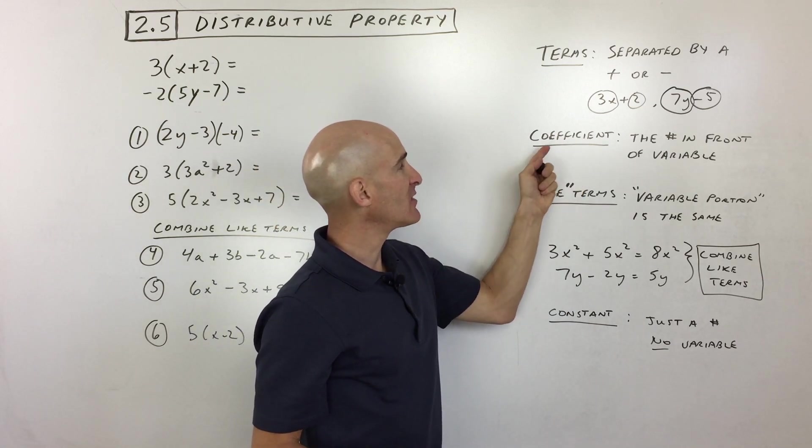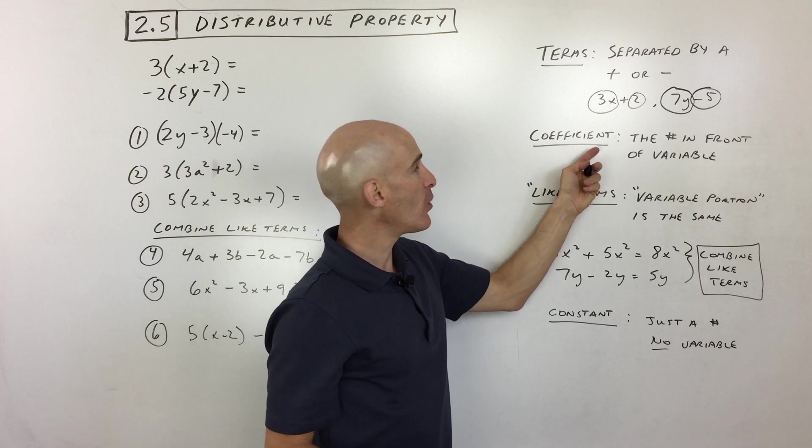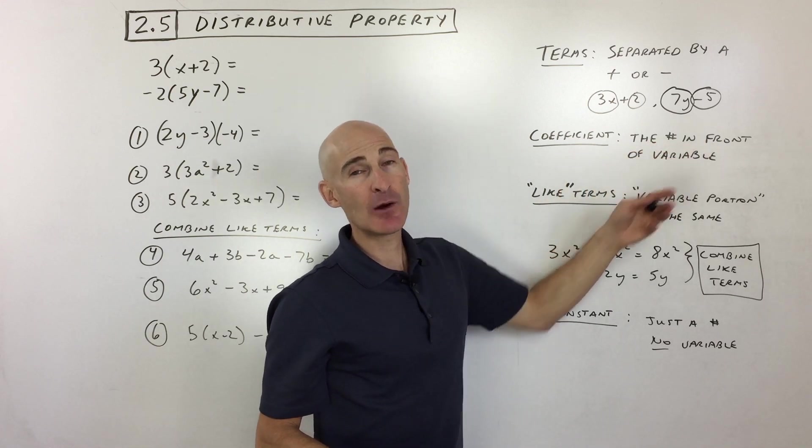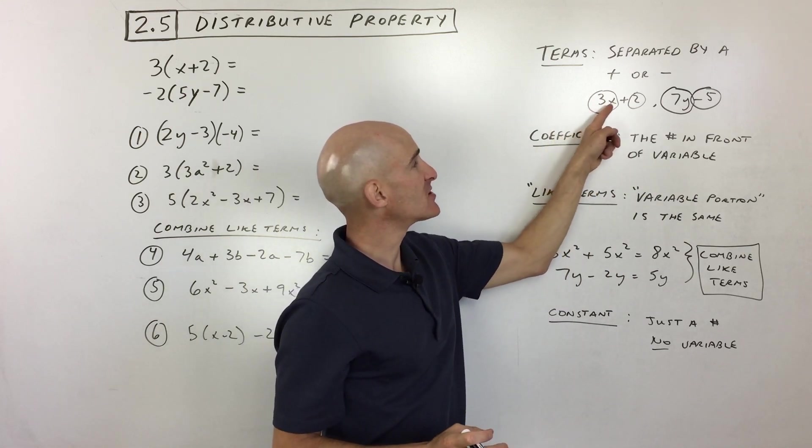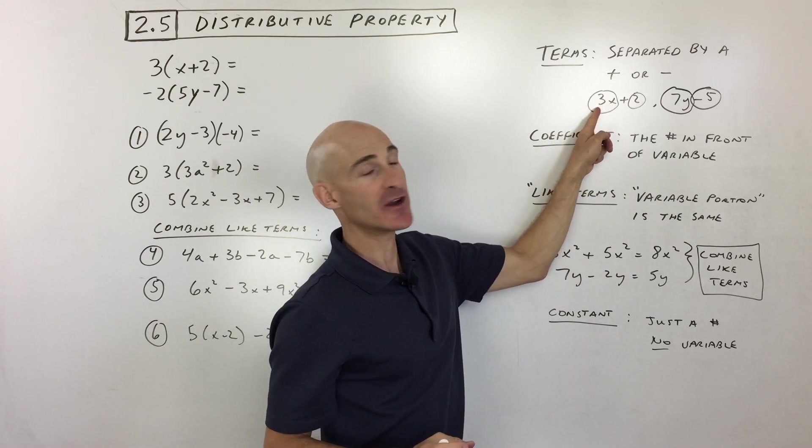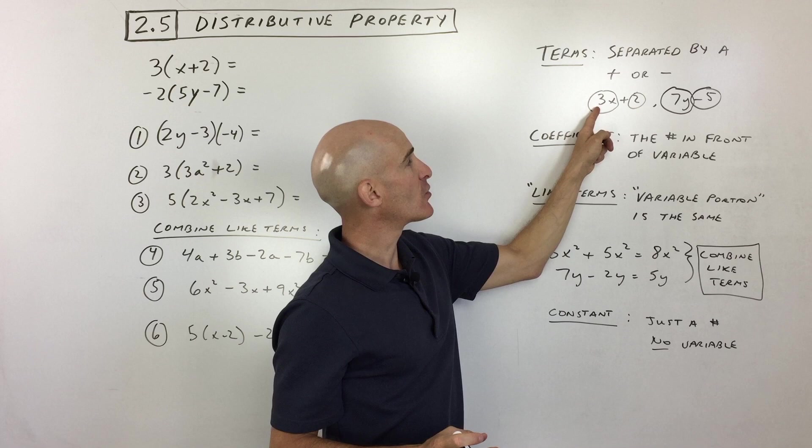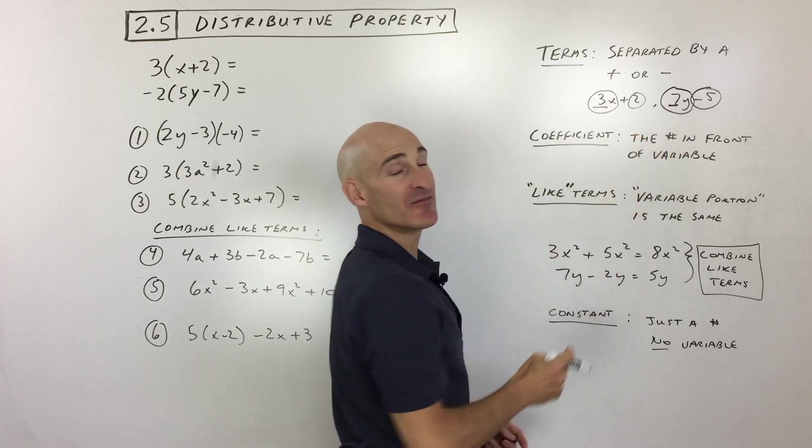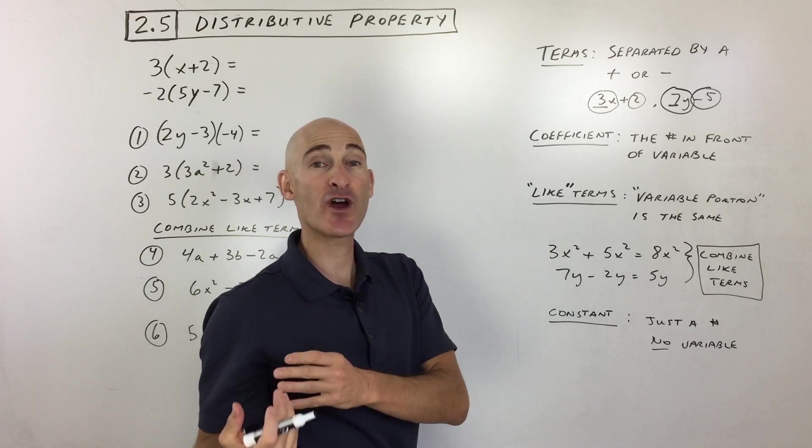Now, coefficient, what does that mean when they say coefficient? Well, the coefficient is the number that comes in front of the variable. Now, when we say in front of, what we're talking about is to the left of the variable. That's in front. So in this case, the coefficient would be 3. In this case, the coefficient would be 7. It's the number to the left or in front of the variable.